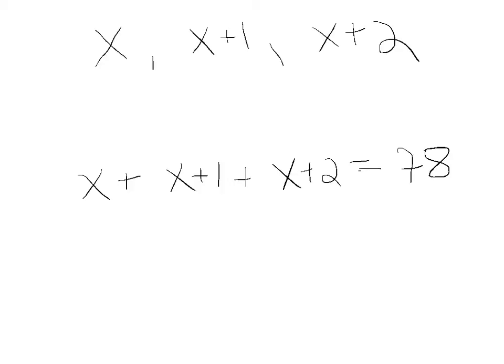If we simplify this equation, we have x, x, and x. So those are like terms, so that makes it 3x. And then 1, positive 1 and positive 2, 3x plus 3 equals 78. And now it's a two-step equation.